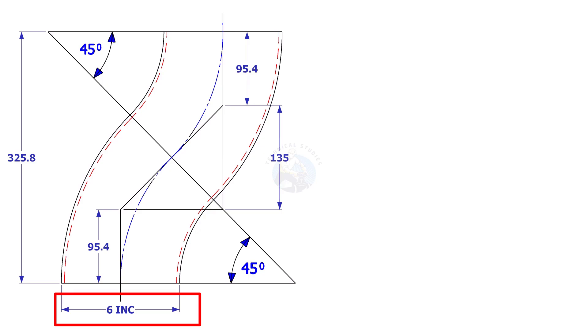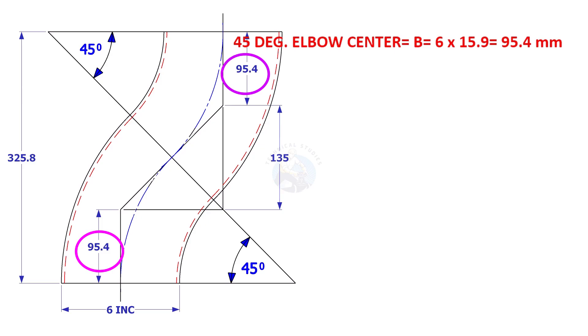In another example, the size of the elbow is 6 inch. 6 inch 45-degree elbow center is 6 multiplied by 15.9, which is 95.4 millimeters.